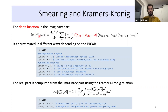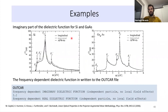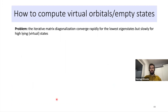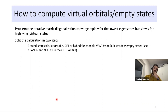The real part of the dielectric function is computed from the imaginary part via the Kramers-Kronig relation. You can set an imaginary shift for this relation in the INCAR file. Because the real part is determined from the imaginary part, you must ensure enough frequencies sample the imaginary part — if you decrease the imaginary shift, you may need to increase the number of frequency sampling points.